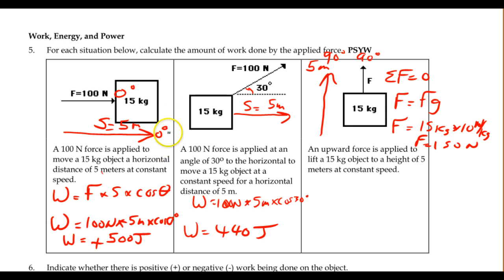So when I go to calculate the work, it's going to be work equals 150 newtons this time, different force, multiplied by 5 meters, multiplied by the cosine of 0 degrees. Again, cosine of 0 degrees is 1. So 150 times 5 is 750 newton meters.